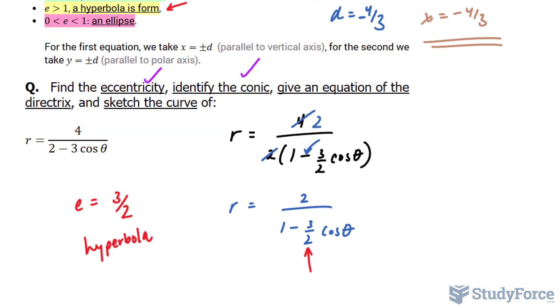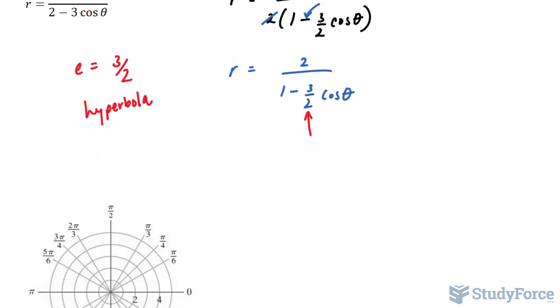Lastly, they want us to sketch the curve. To sketch the curve, of course, we need the directrix. But we also need the vertices. Remember what a hyperbola looks like. A hyperbola looks like two curves that are facing in opposite directions, and they have two vertices, one here and one here.